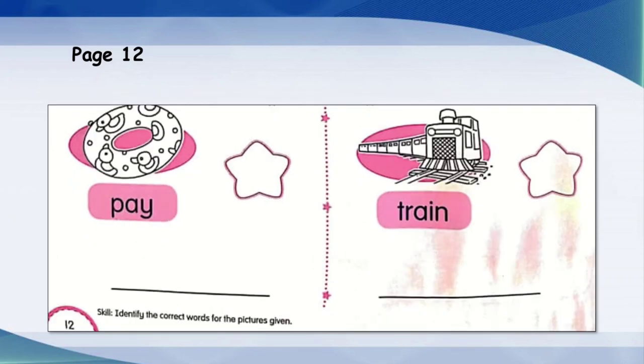Now let's see the last row of pictures. Pay. So students, is that picture a pay? No, it's wrong. It's not a pay. It's a float. F-L-O-A-T. Float.